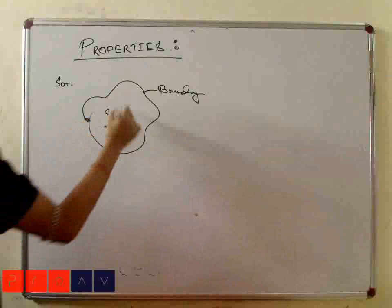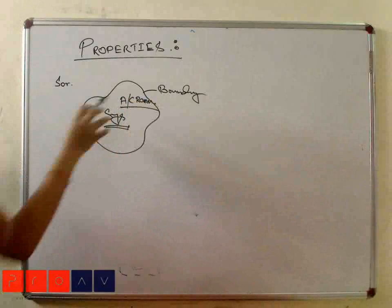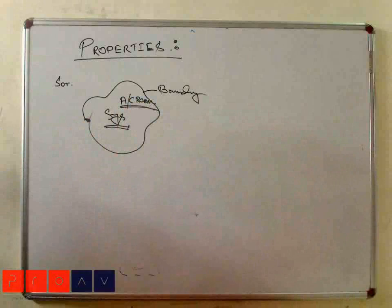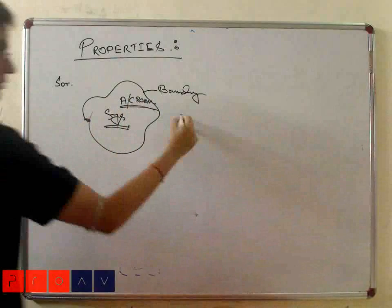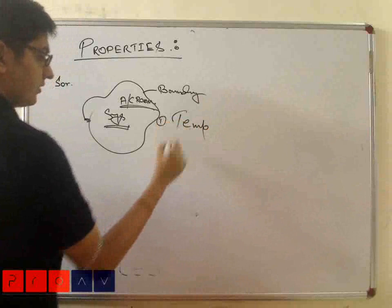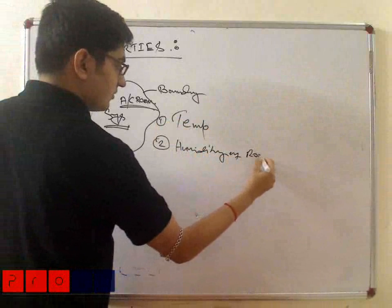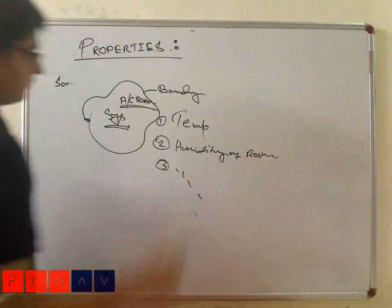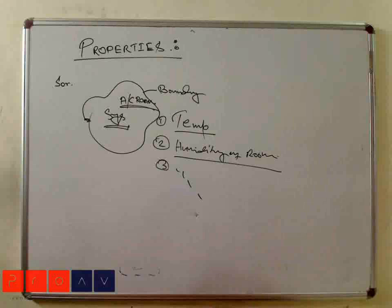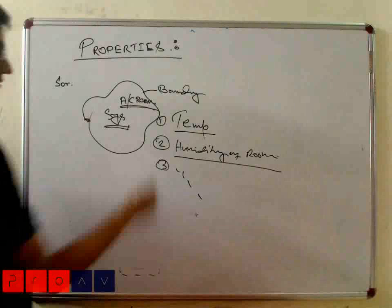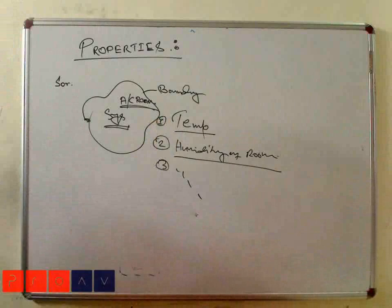To indicate the situation of the system, we use some parameters. Say it is an air conditioning room — the system is the AC room. To define the system, we use temperature of the room, humidity of the room, etc. So temperature and humidity are the properties of the system. Similarly, density and pressure are also properties of the system.